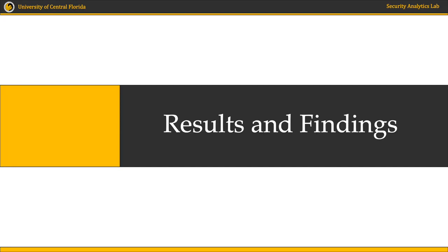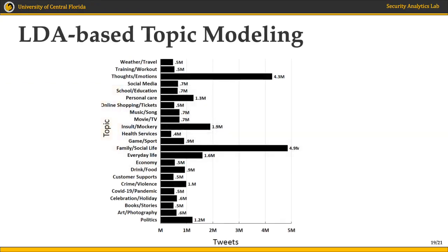Finally, I will show some of the results obtained after applying both topic modeling and sentiment analysis on the collected tweets. After applying topic modeling and manual inspection of the resulting keywords and assigning topics, we can see the distribution of these topics across the tweets during the 7-month period studied. We found that topics related to family and social life and thoughts and emotions represent 35% of the collected tweets.